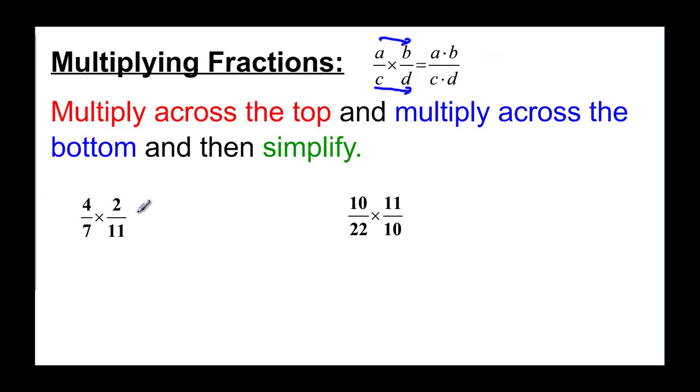If we look here, we're going to multiply straight across, so 4 times 2 gives us 8, and then 7 times 11 gives us 77. You can't reduce that one, so we have 8 over 77.